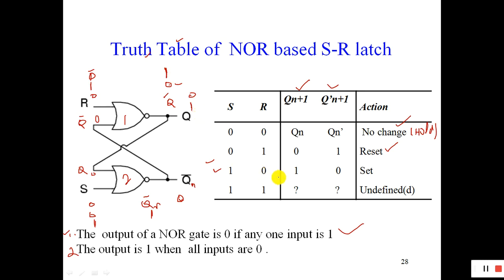When S=1 and R=0, the next value Q(n+1) will be 1. Q and Q bar must be complemented to each other — by definition, one is Q and the other is Q bar. So whatever previous value you had, it will set the Q to 1.